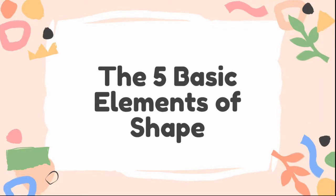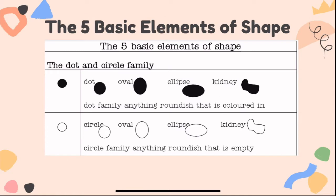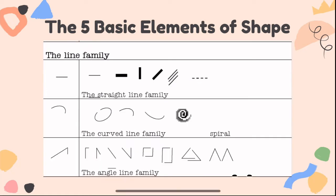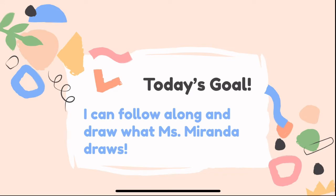Hello artists, welcome back! It's Miss M with another video. Today we're learning about the five basic elements of shape. There are two different families: we have the dot and circle family, and then we also have the line family. The line family is made up of the straight line family, the curved line family, and the angle line family.